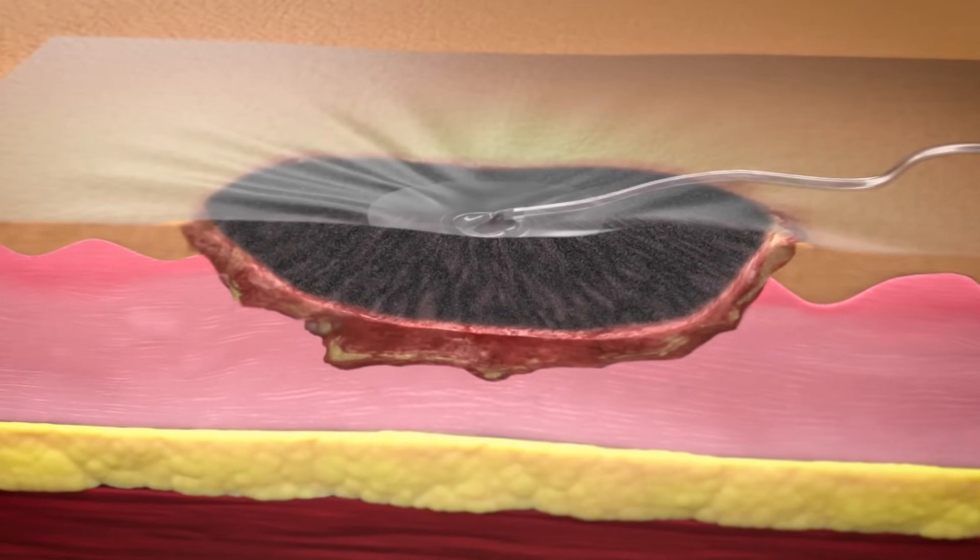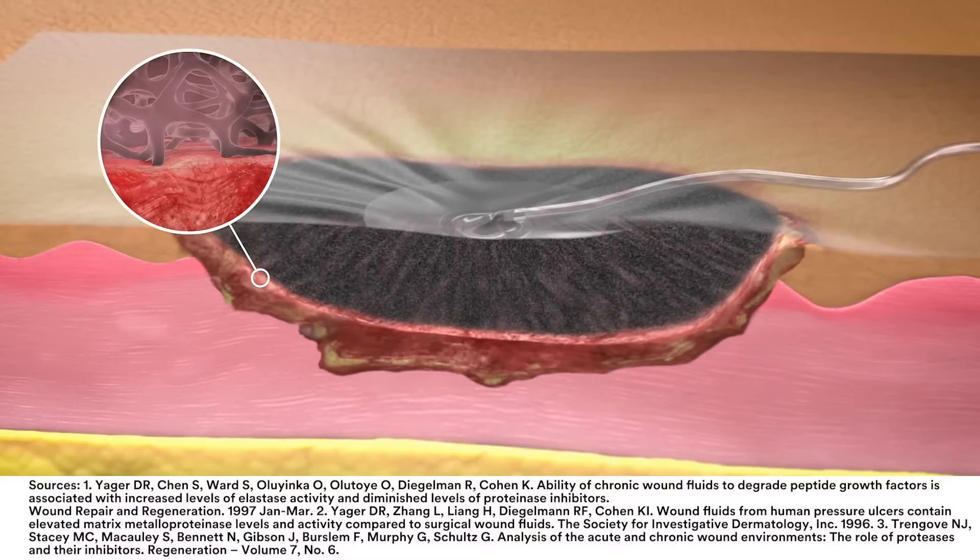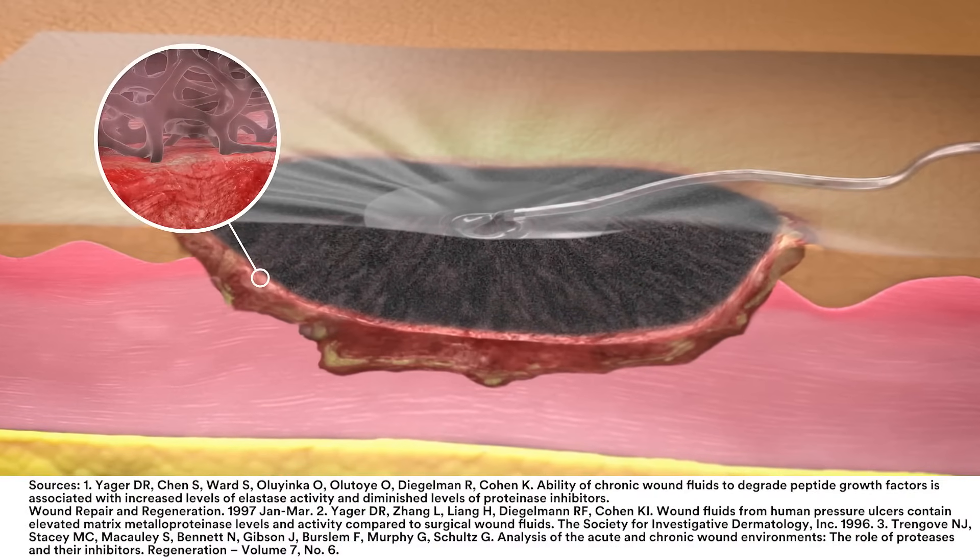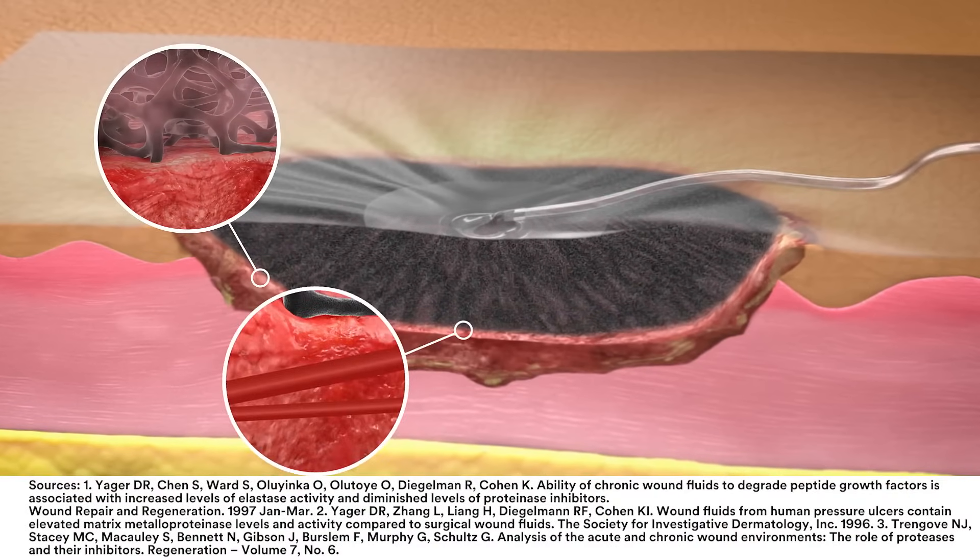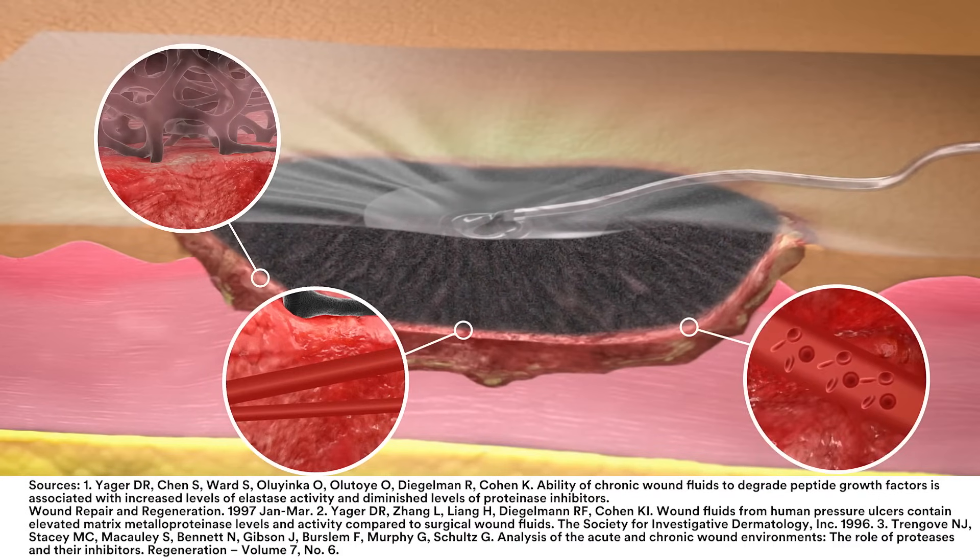Macrostrain facilitates removal of wound exudate, which may contain inhibitors of wound healing. Removal of wound fluids assists in the reduction of edema, which facilitates the flow of blood into the wound bed, providing the oxygen and nutrients that are needed for wound healing.